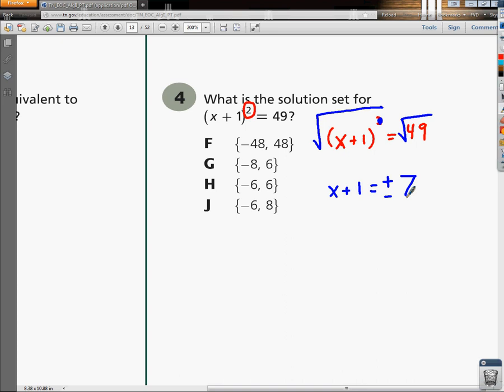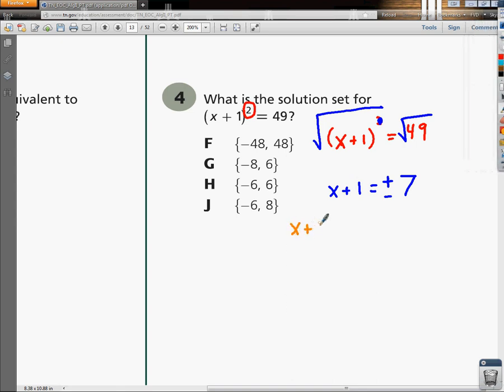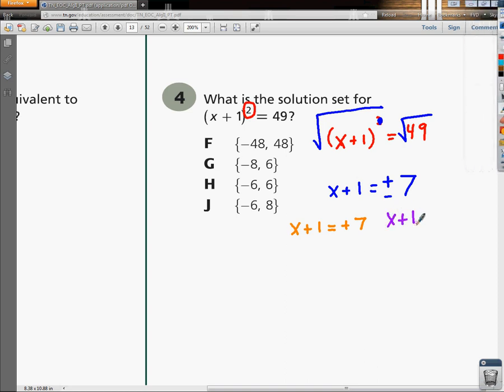So now, we end up with two separate equations. One of our equations ends up being x plus 1, and that equals the positive 7. And then our second equation is now going to be x plus 1, and this time it needs to equal the negative 7 that we figured out. So now, we have this negative 7 here.